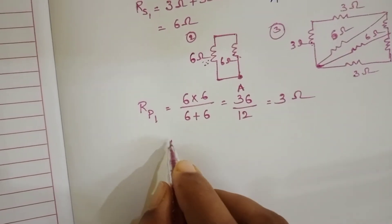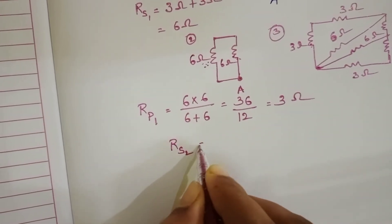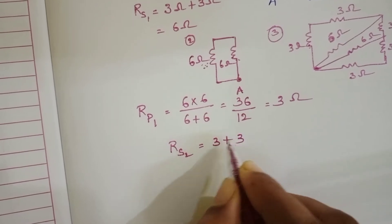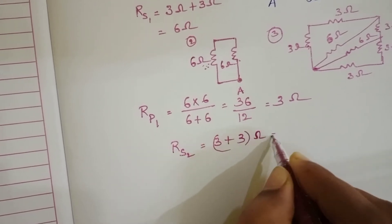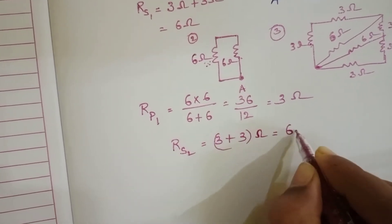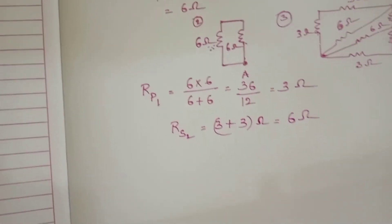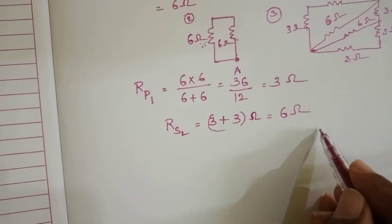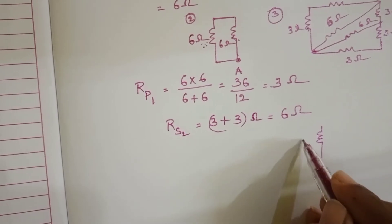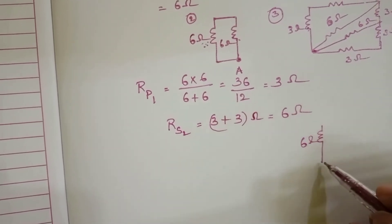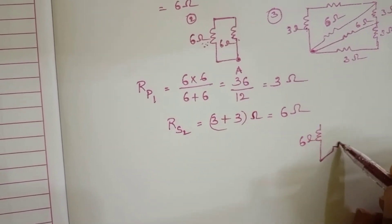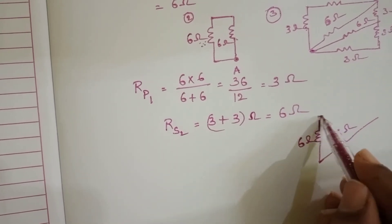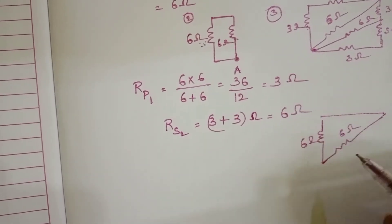So RS2 is equal to 3 plus 3, which equals 6 ohm. Now here we get a 6 ohm resistor, and here another 6 ohm resistor. There is no other resistor here.